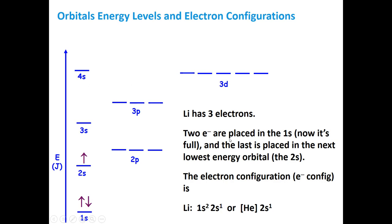As a little example, I've added lithium. Lithium has three electrons, and we know that because lithium has three protons. For a neutral atom, it has to have the same number of electrons as protons. So we're going to fill orbitals from lowest to highest, putting two electrons in the lowest energy orbital, and then the one remaining electron goes into the next highest orbital, which is the 2s.